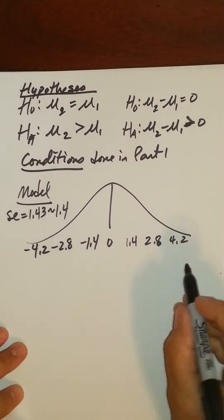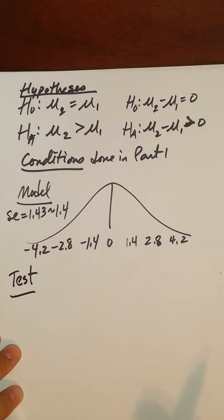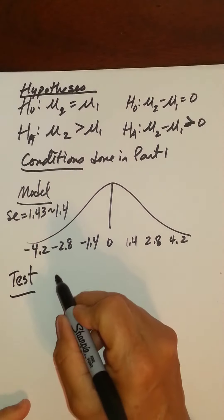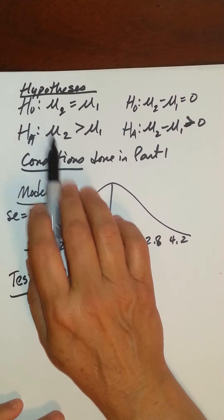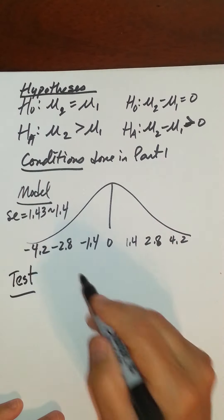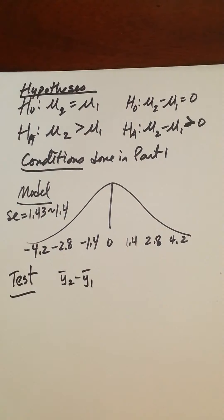So now, we've got our model, we're going to test this with an actual difference in sample means. So we're going to test it with, now remember, stay consistent with your order. I did mu2 and then mu1. So I need to subtract y-bar 2 minus y-bar 1.